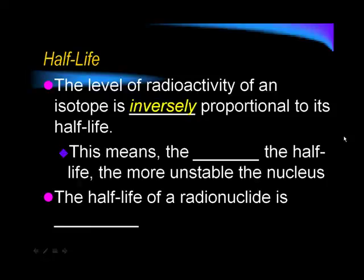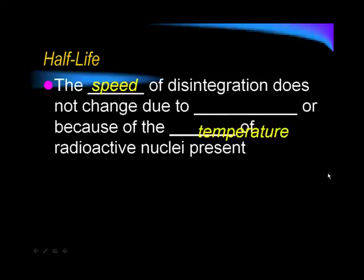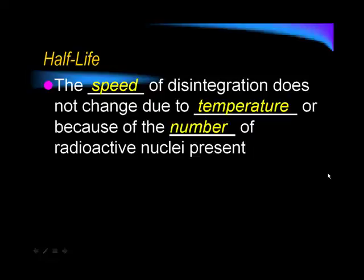So, the level of radioactivity is inversely proportional to half-life. This means the shorter the half-life, the more unstable the nucleus is. So, like I was showing you with the copper. One thing to note is the half-life of a radionuclide is constant. It does not change. The speed of disintegration does not change due to temperature or because of the number of radioactive nuclei present.